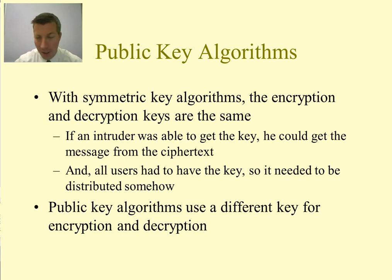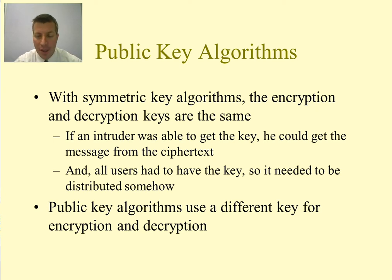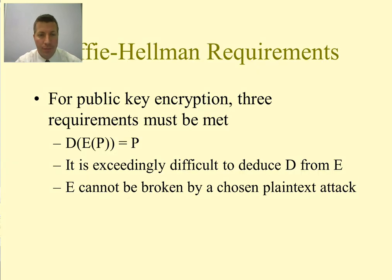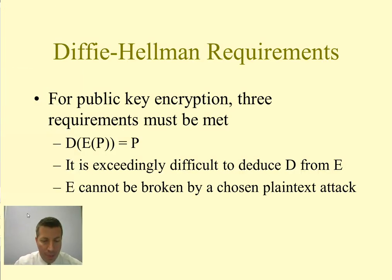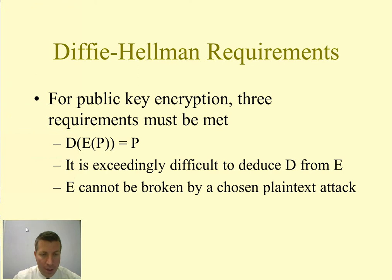Today we'll talk about how we can distribute keys. Public key encryption, also known as asymmetric encryption, allows us to use a different key for encrypting and decrypting. Diffie and Hellman came up with requirements for public key encryption — there are three requirements that must be met.